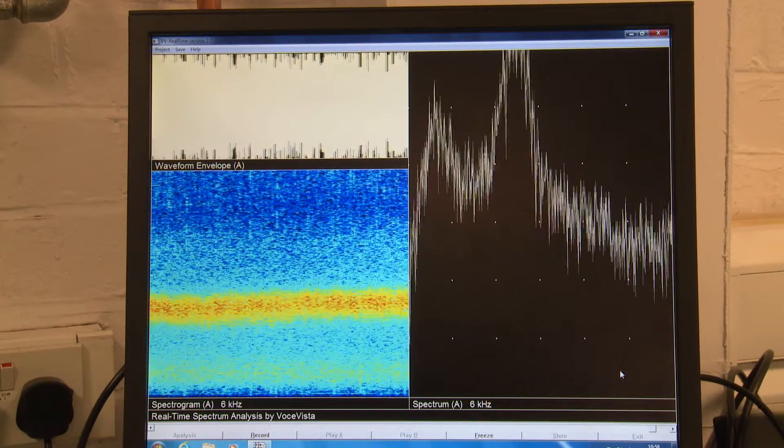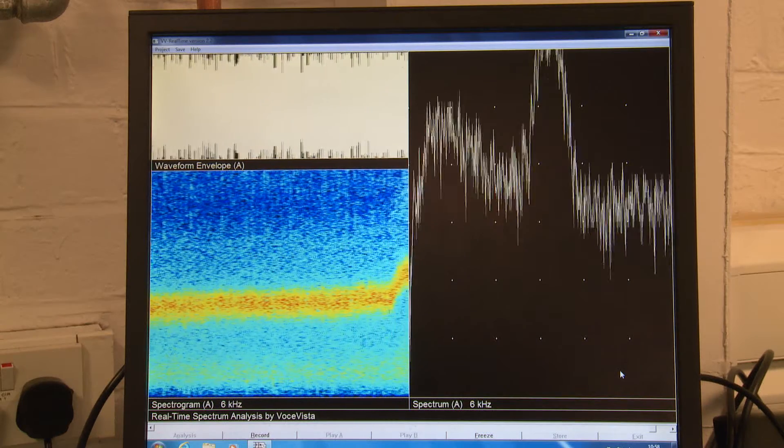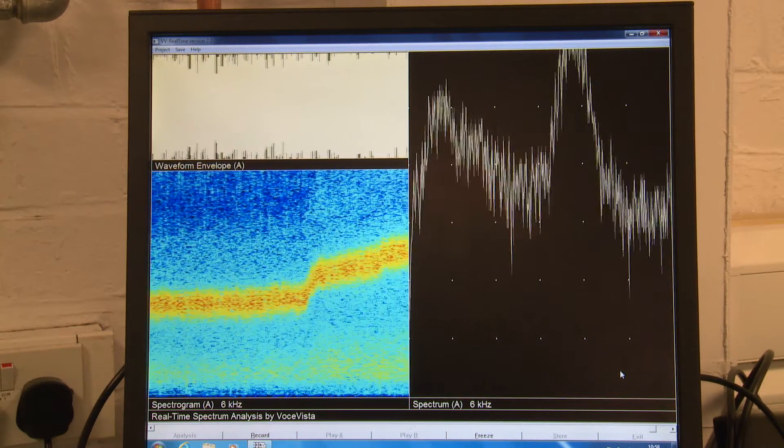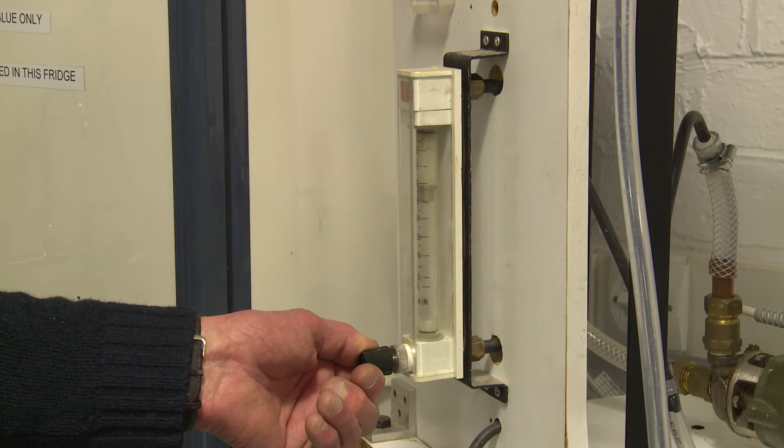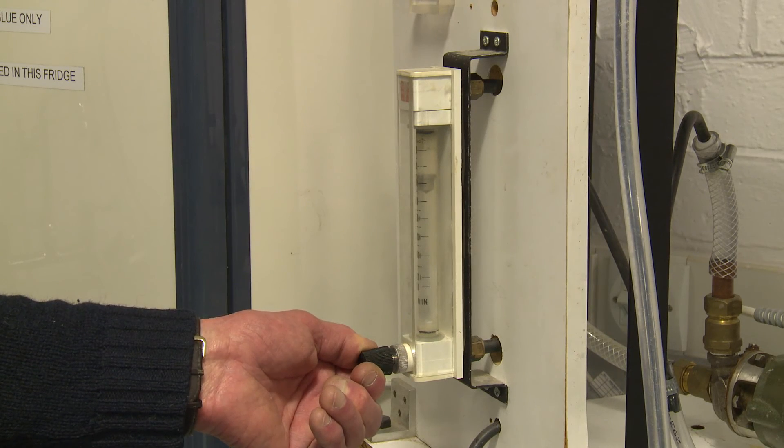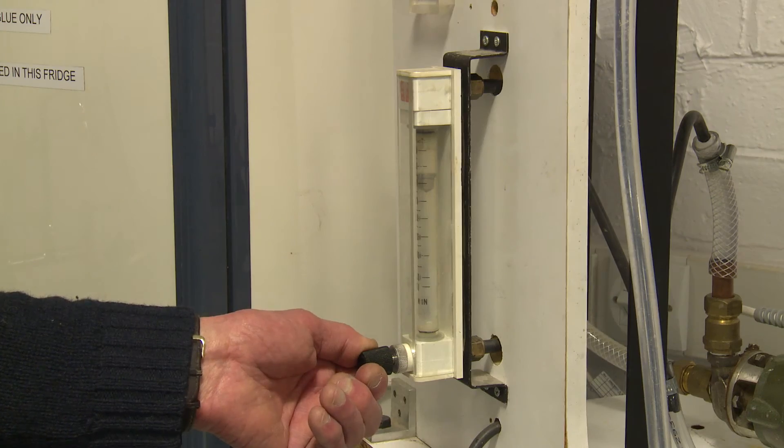When the signal is displayed as a spectrogram, it is seen that the Doppler frequency rises and falls as the flow rate in the tube is turned up and down.